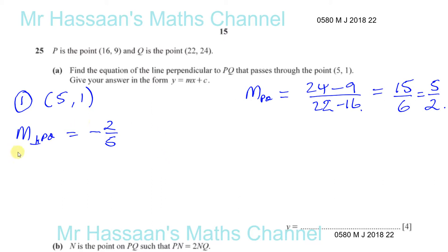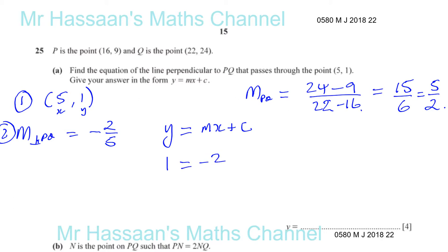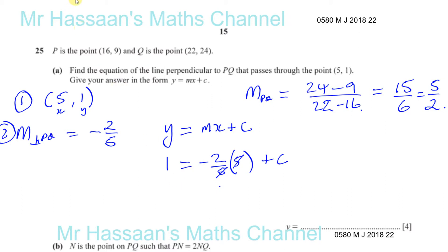Now we have the information needed to find the equation of the line. The equation is given by y = mx + c. Substituting in the point (5, 1): 1 equals negative 2 fifths times 5, plus c. The 5s cancel out, leaving 1 equals negative 2 plus c. Adding 2 to both sides gives c equals 1 plus 2, which is 3.